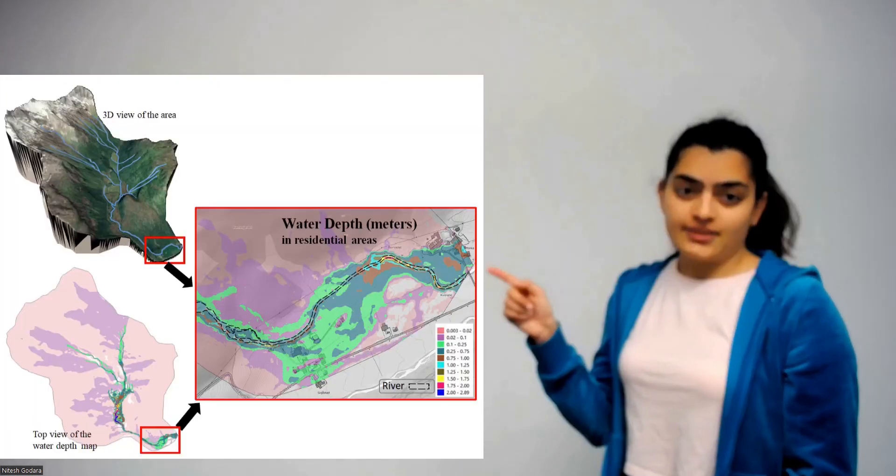I integrate them because, first, it is more time efficient instead of running these models separately and then combining them. The second reason is that I get more accurate results because of the seamless connection between these two models. So the results from my study look something like this.